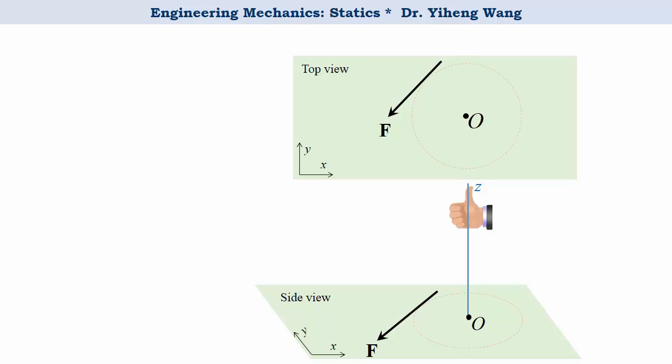Which means that if you extend the four right-hand fingers from the axis towards the force, and then roll the fingers to the direction of the force, your thumb will point towards the direction of the moment vector, noted by MZ indicating it is a moment about the Z axis.